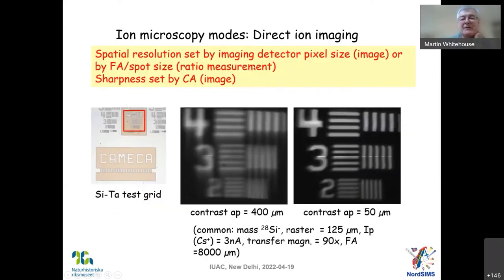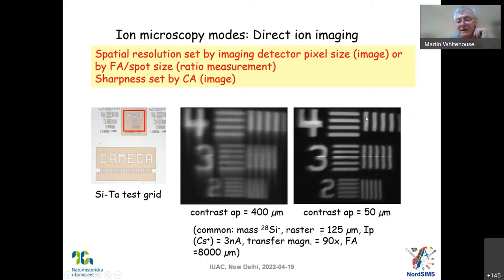The spatial resolution is set by the imaging detector pixel, and the sharpness is set by the contrast aperture. Here is a test grid — with a large contrast aperture imaging this little area, the image is rather blurred. But if we go to a smaller contrast aperture, we get a sharper image. The problem with going to a smaller contrast aperture is, of course, we reduce the amount of material going through to be measured, so there are always compromises.